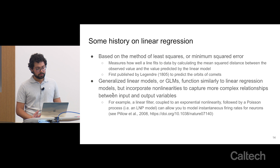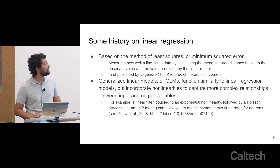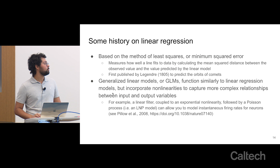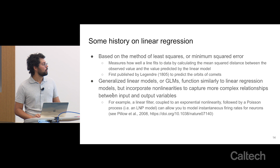Now, a brief history of linear regression. It's based on the method of least squares, or minimum squared error, which measures how well a line fits to data by calculating the mean squared distance between an observed value and the value predicted by the linear model. The first publication on least squares was in 1805 by Legendre, and it was used to predict the orbits of comets. Generalized linear models function similarly but incorporate nonlinearities to capture more complex relationships — including the linear-nonlinear-Poisson model, described in Pillow 2008, which models instantaneous firing rates for neurons.